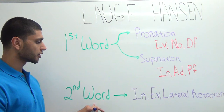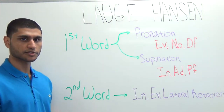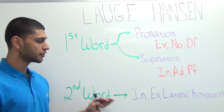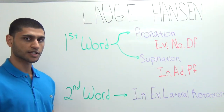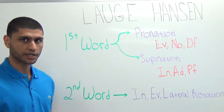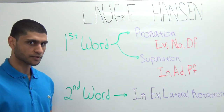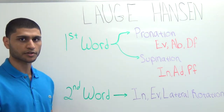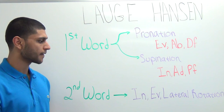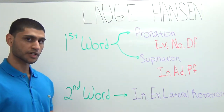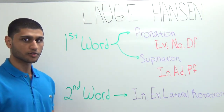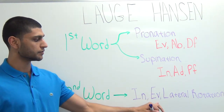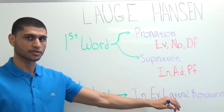The second word describes the movement of the talus within the ankle mortise relative to the tibia. It is the movement of the talus that is actually causing all the injury. Keep in mind the talus itself is not being injured — rather its movement is what's damaging the surrounding architecture. For the four major classifications, the talus is either going to invert, evert, or laterally rotate.